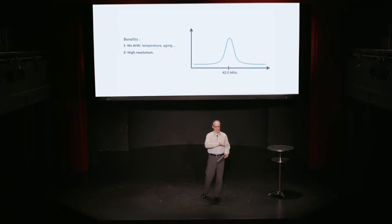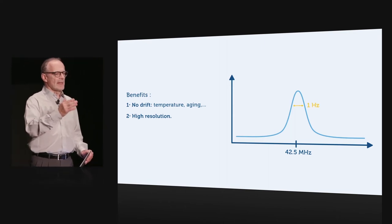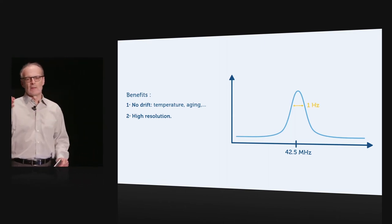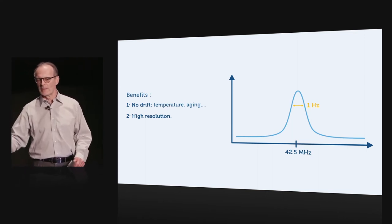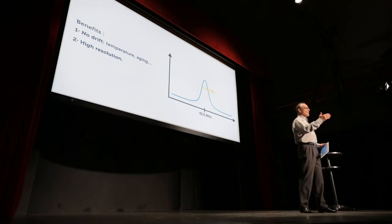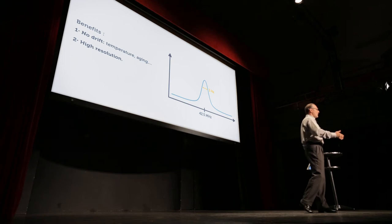Another benefit is that the resonance peak is very narrow. Typically, in a proton sample, we're looking at a resonance peak that's about one hertz. If you take that one hertz and the Larmor frequency of 42.5 megahertz at one tesla, you end up with a resolution of something on the order of 0.02 parts per million. Not bad.